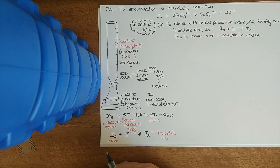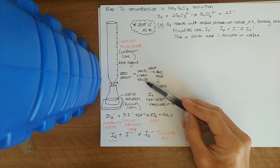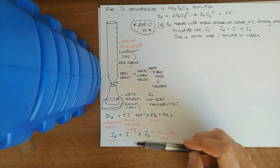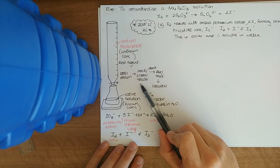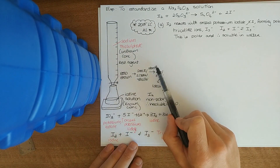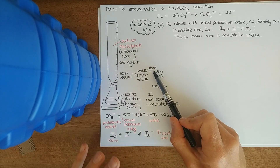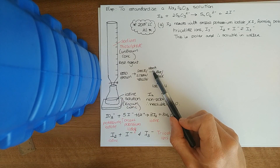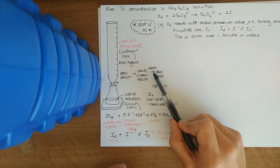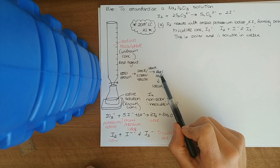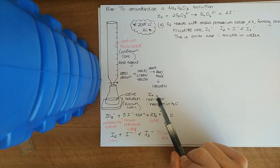Name a suitable indicator: starch indicator. At what stage is it added? When we get a pale straw yellow color. State the color change at the end point: blue-black to colorless. Your iodine solution reacts with your sodium thiosulfate. Once it goes pale straw yellow, the reaction is nearly over, so we add starch. It's very hard to see the difference between pale straw yellow and colorless — if there's any iodine present, the starch turns it blue-black, and then you titrate to colorless.